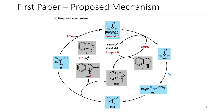This trityl peroxide radical then forms triphenylmethanol, and through the treatment of acid, this regenerates the trityl carbocation, closing the catalytic loop. Once TEMPO has done this conversion of the amine to the radical cation, the initial TEMPO has also been regenerated, closing the full catalytic cycle.